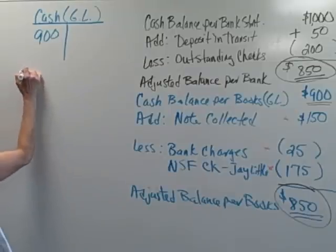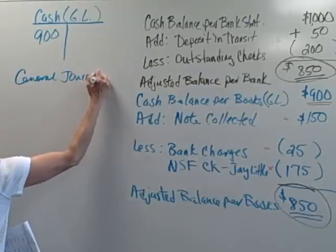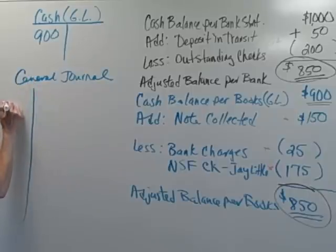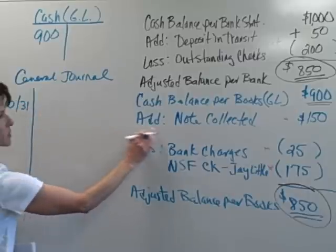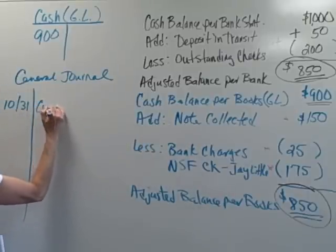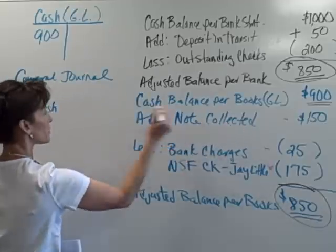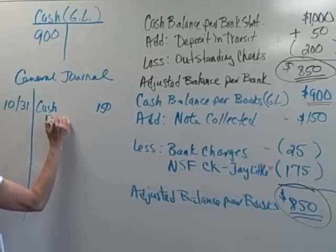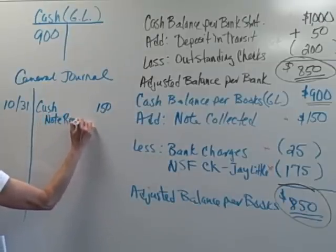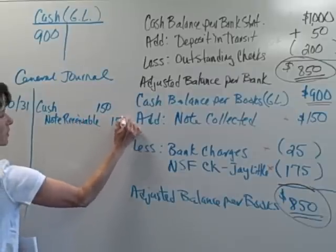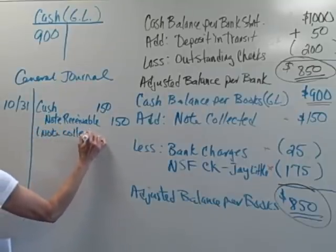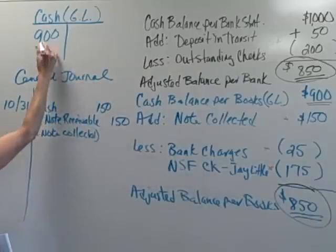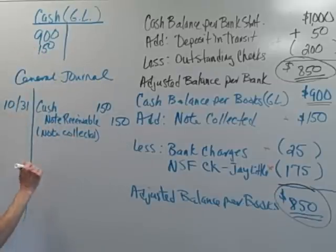We make up a general journal page. Let's say this was dated October 31st, the date of the reconciliation. The first entry is for the note that was collected — cash went up $150. So we're going to debit cash $150 and credit our notes receivable account for $150. This was for a note collected. When we post that debit to our cash account, it increases our general ledger account.